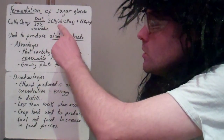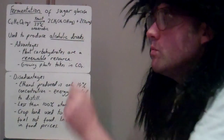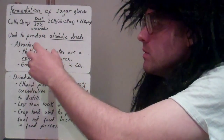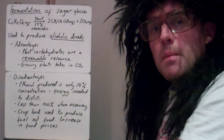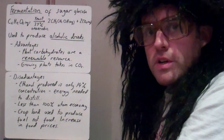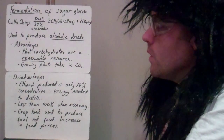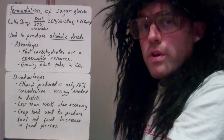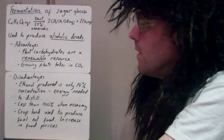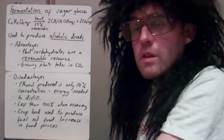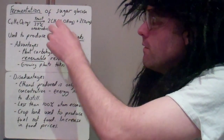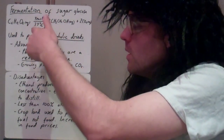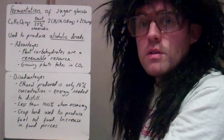Here we make two moles of ethanol and two moles of CO2. This process will only produce ethanol up to about 14% concentration. This process is used to make things like beer and wine — alcoholic drinks. The reason it doesn't get any higher concentration than that is because the ethanol produced will start to kill the enzymes in the yeast and stop the process continuing.